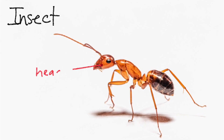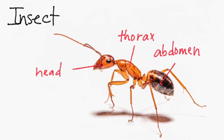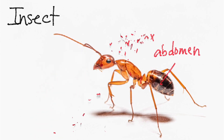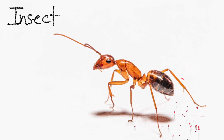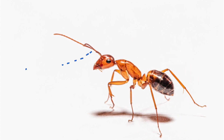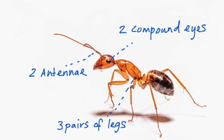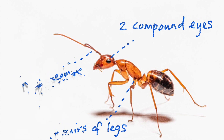The insect has three body segments: the head, thorax, and abdomen. Insects have two antennae, two compound eyes, and three pairs of legs attached to their thorax.